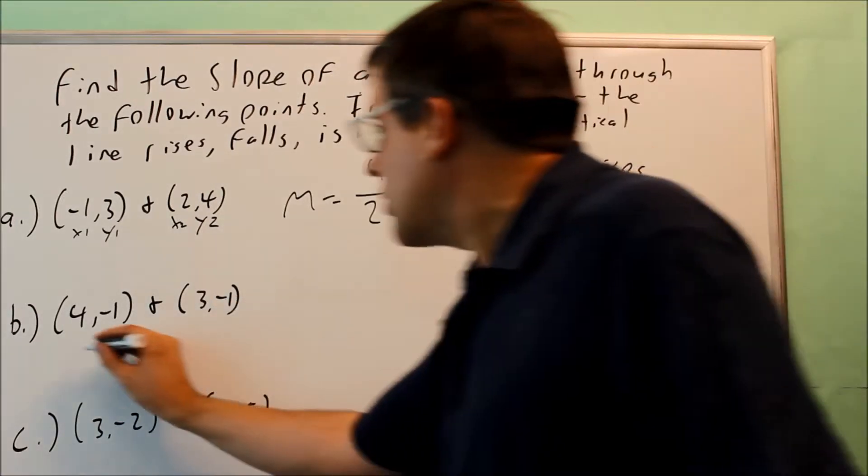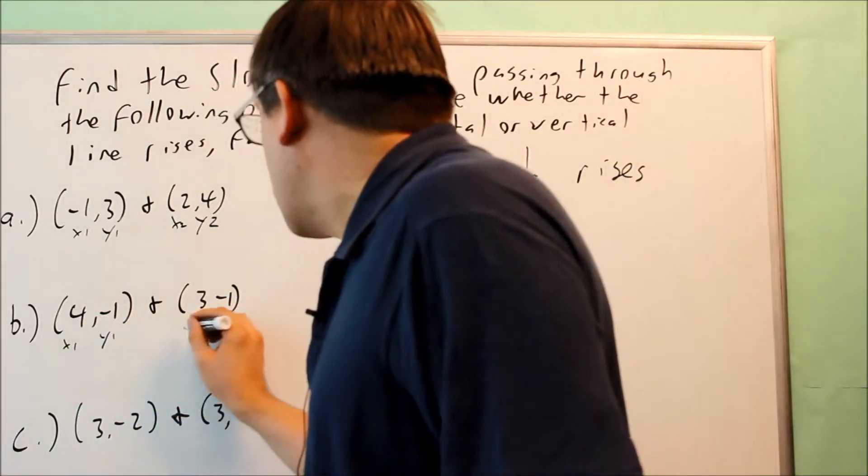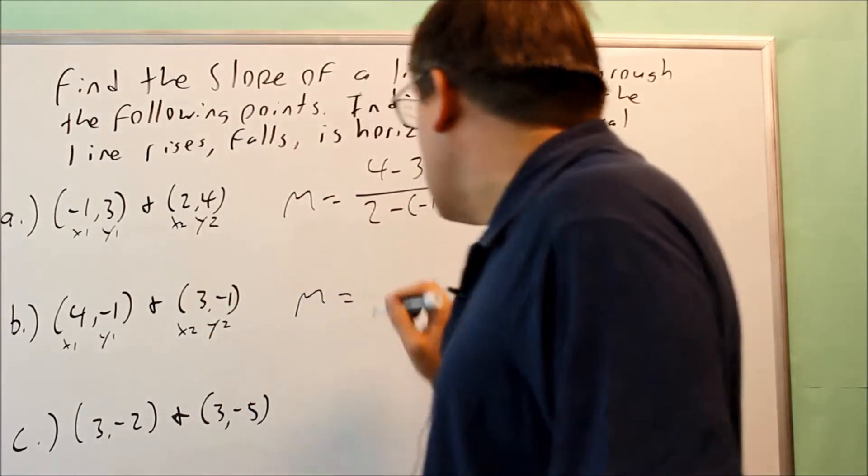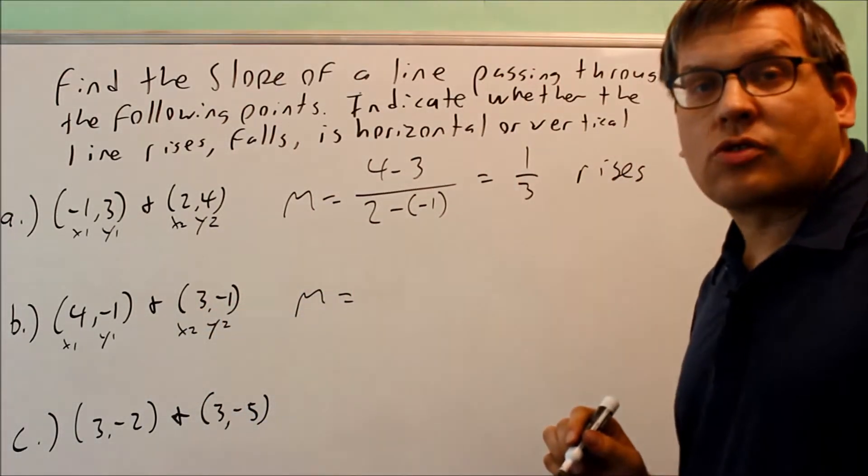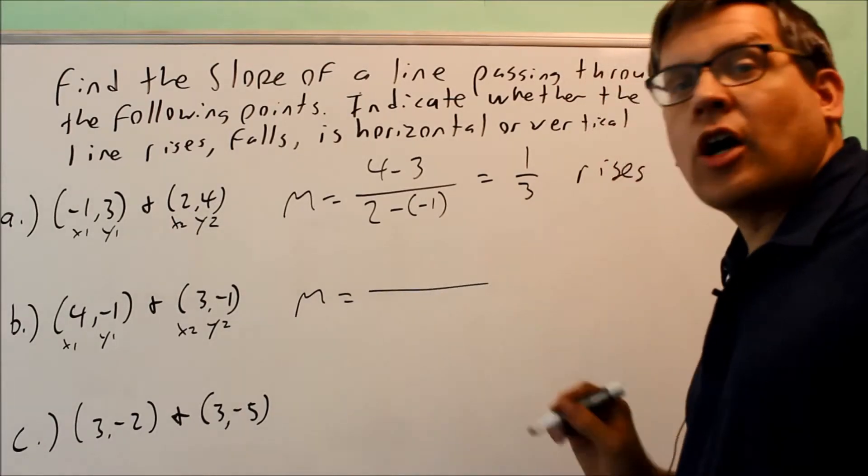Next, we have these set of points. Once again, I'm going to label them x1, y1, x2, y2. I'm going to use the same formula again, the slope formula. Change in y over change in x.